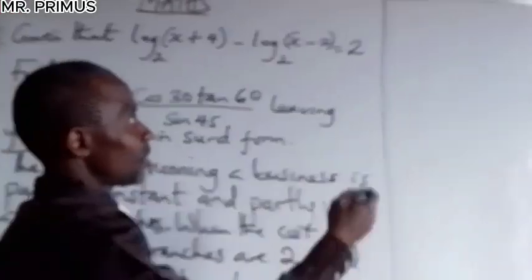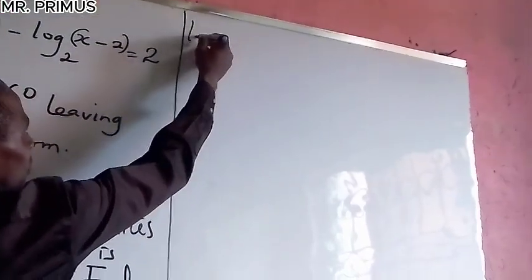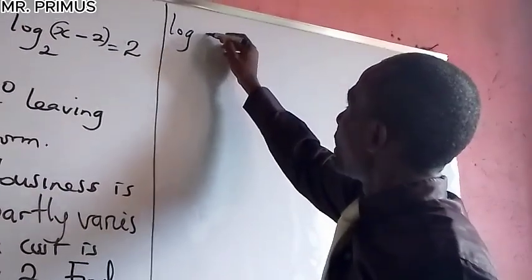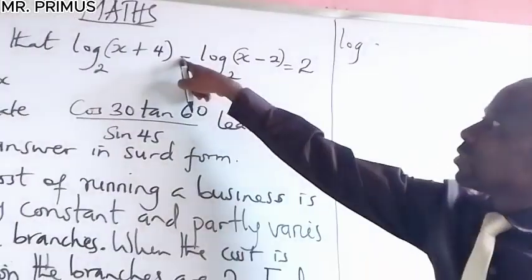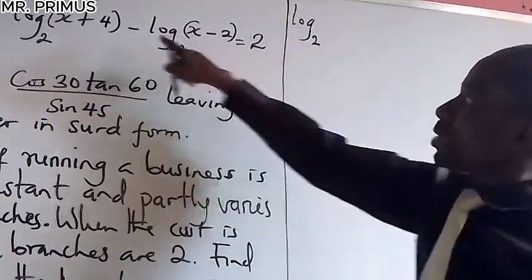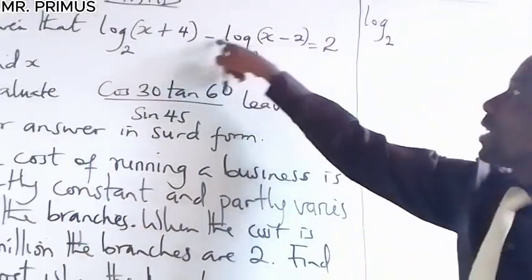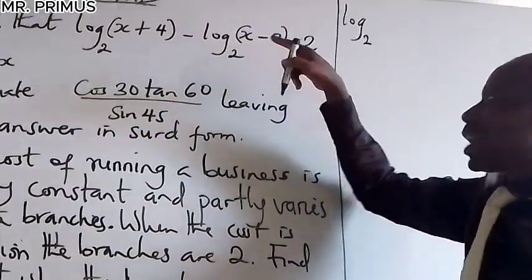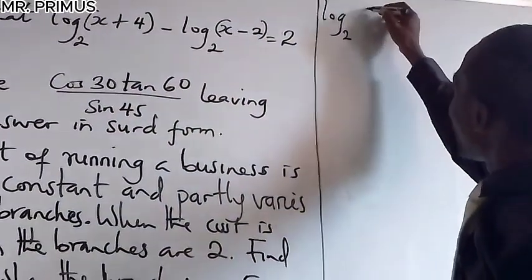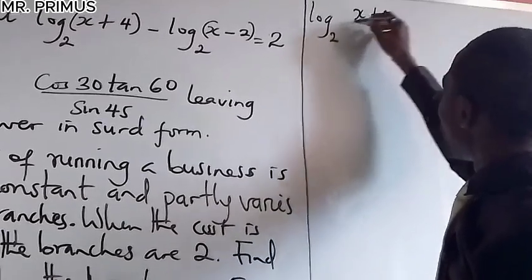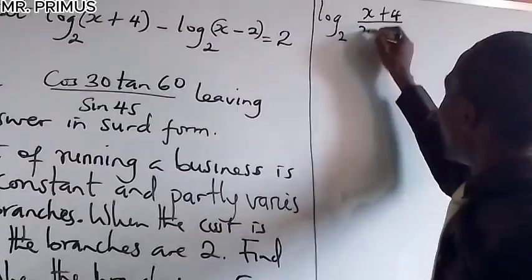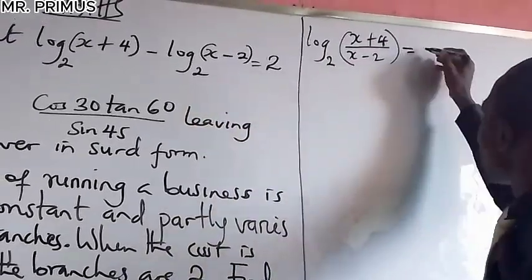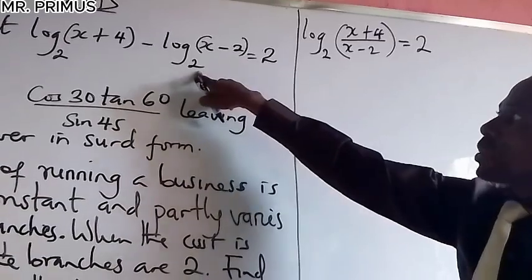When you have a minus sign between two logs, it means division. So log base 2 of (x + 4) minus log base 2 of (x − 2) becomes log base 2 of (x + 4) over (x − 2). If it were a plus sign, it would mean multiplication. So we have log base 2 of [(x + 4) / (x − 2)] equal to 2.